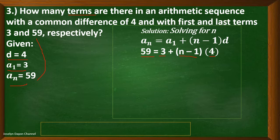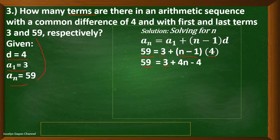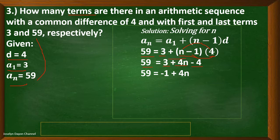Simplifying: 59 equals 3 plus n times 4, which is 4n, minus 1 times 4, which is negative 4. Combining 3 and negative 4 gives negative 1. So we have 59 equals 4n minus 1. Now we solve for n.